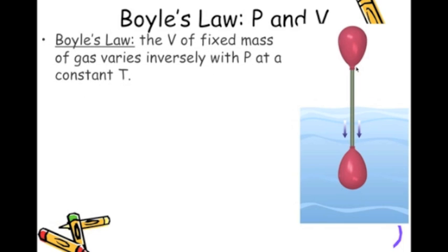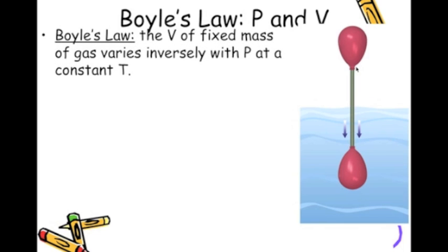Now, with Boyle's Law, we see the formal definition of it is the volume of a fixed mass of gas varies inversely, so we see it's inversely proportional, with the pressure at a constant temperature. So we see that we have a constant temperature here. And really, to tell the difference between the gas laws, you can always look and see what's held constant. In Boyle's Law, temperature is always held constant.